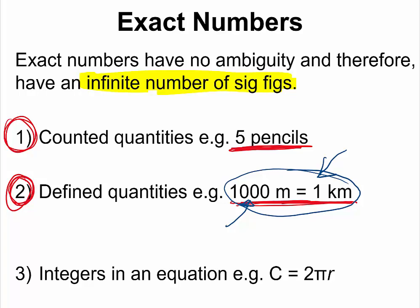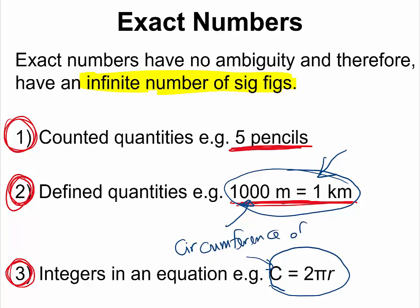The last type of exact number involves mathematical constants. For example, the circumference of a circle is given by 2πr, where C represents the circumference of a circle. If you look at pi and say it has three significant figures, that would be wrong, because it is simply a constant — it has an infinite number of significant figures.